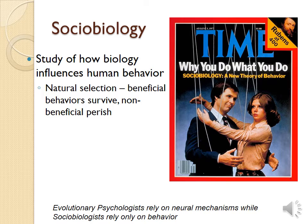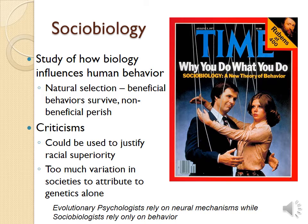Sociobiology looks at the study of how biology and human behavior interact — essentially how biology influences our behavior. It's built heavily off the idea of natural selection, that any beneficial behaviors would continue to survive in a society and anything non-beneficial would perish. Unfortunately, this has been used to support or justify racial superiority, and ultimately there's way too much variation in societies to attribute to genetics alone. A lot of what we talk about has more to do with environment and culture than truly our genetics.